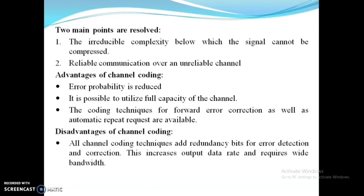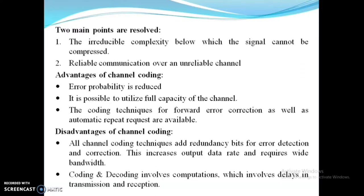The disadvantage of channel coding: in the coding technique for error detection and correction, we use an additional bit called the redundancy bit. This increases the output data rate and requires wider bandwidth. Also, in the coding and decoding process, errors can be corrected by generating an automated repeat request, which causes a slight delay at the transmission end, reflected at the receiver end as well. The coding and decoding involves computation, which introduces delay in both transmission and reception.